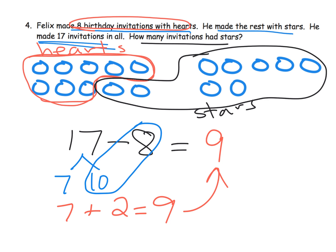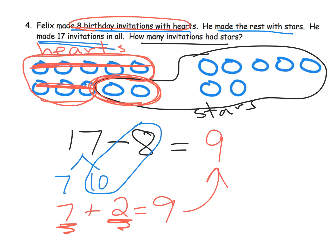How does this connect with our picture? When we do ten minus eight and get two, that's right here — here's ten minus the eight hearts, so crossing off the eight hearts gives us two. And where does the seven come from? It comes from over here. That's why seven plus two is nine, and nine matches what we have in our drawing.